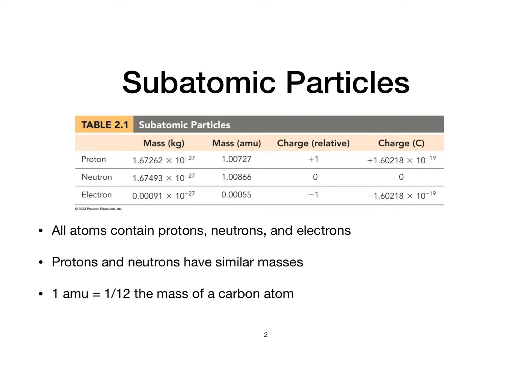Protons and neutrons have similar masses, as we can see here highlighted in red, and the electron has a much, much smaller mass. Typically the mass of an electron is reported as 9.1 times 10 to the negative 31. These masses show you that the proton and the neutron are roughly the same and the electron is much, much smaller.